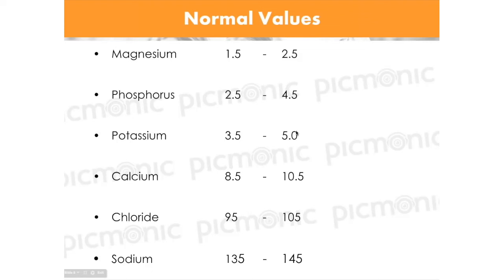There may be extra details in some of these, but you don't need them to answer 99% of questions. So the generalized themes: magnesium — muscle relaxation; phosphorus — muscle contraction; potassium — intracellular excitation; calcium — bones and muscle excitation; chloride — cellular excitation; sodium — extracellular excitation.